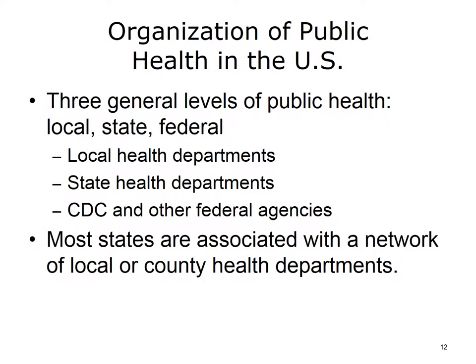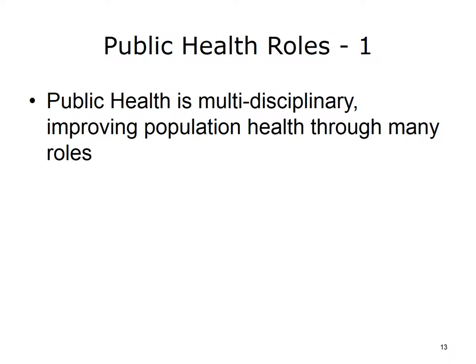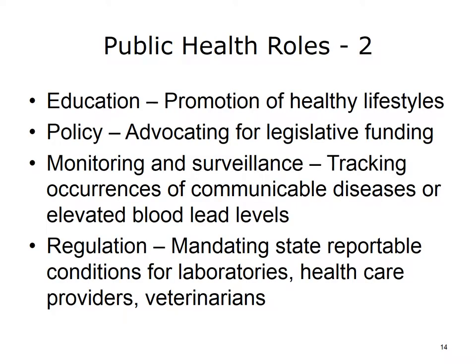In general, there are three levels of public health in the U.S.: local, state, and federal. Local health departments may exist at the county level, or in some cases may represent more than one county. State health departments usually, but not always, are associated with a network of local health departments. The federal level is represented by the Centers for Disease Control and Prevention, or CDC, as well as other federal agencies.